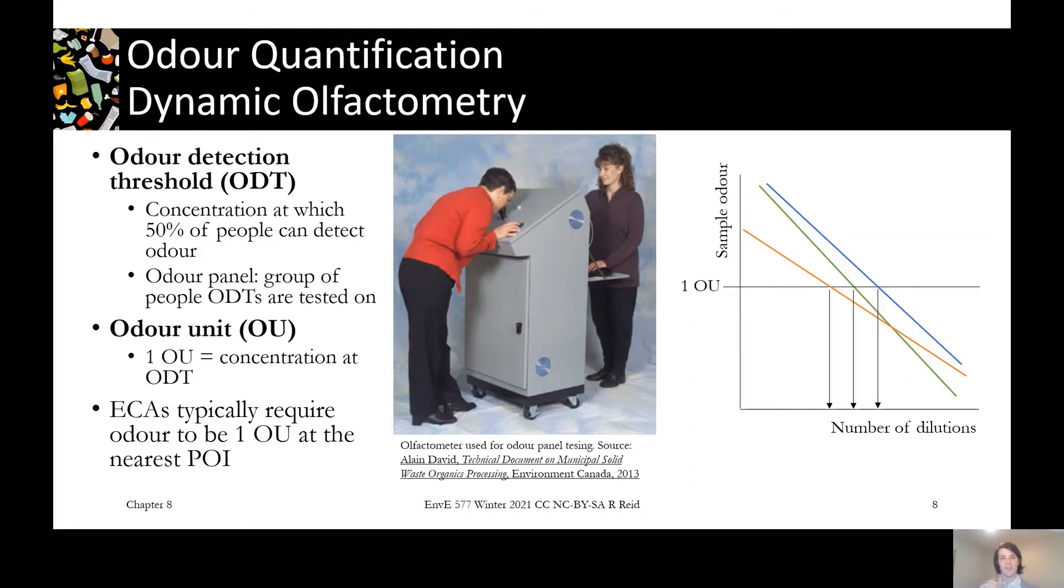An odour detection threshold would be in your normal concentration units for an air contaminant, like PPMs or milligrams per cubic meter.